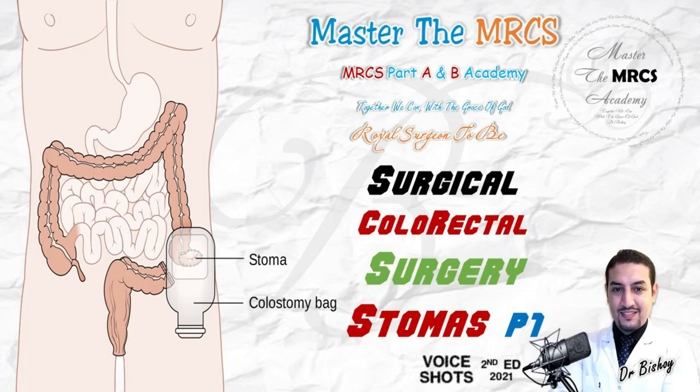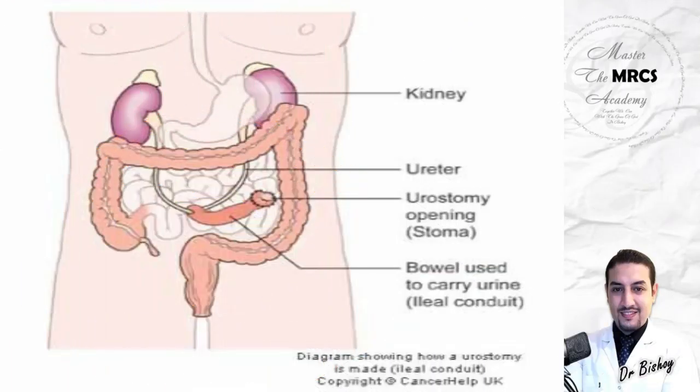Regarding urostomy: a urostomy is a surgical diversion of the urinary system, performed for bladder cancer, urinary incontinence, or neuropathic bladder. When these conditions are present, you divert the urinary system, creating a urostomy stoma for urine.